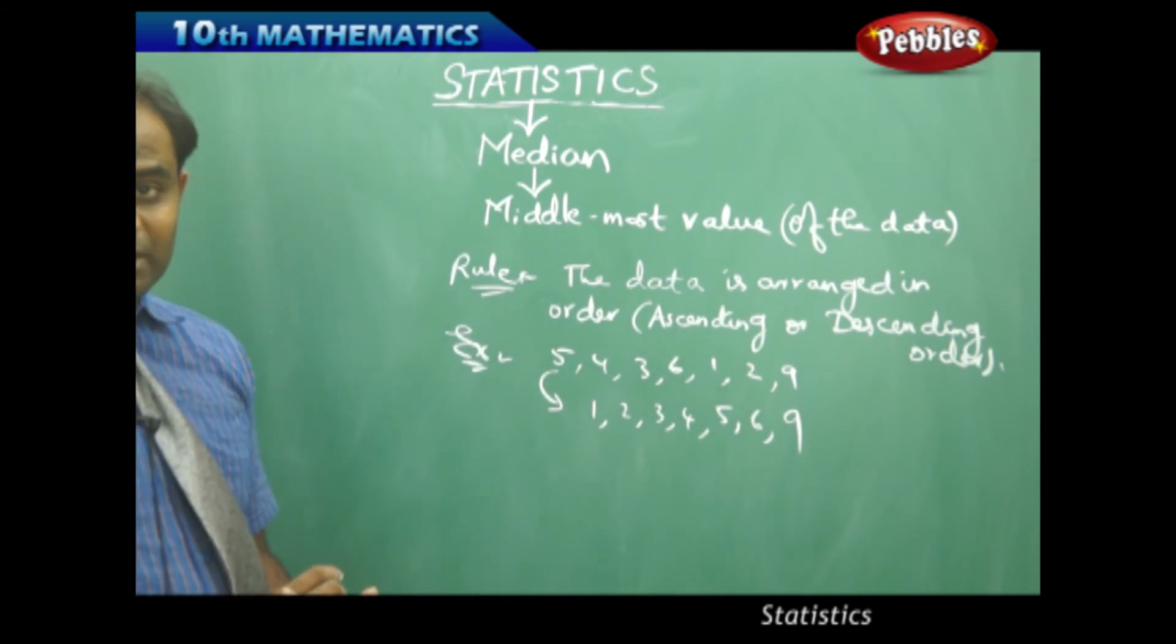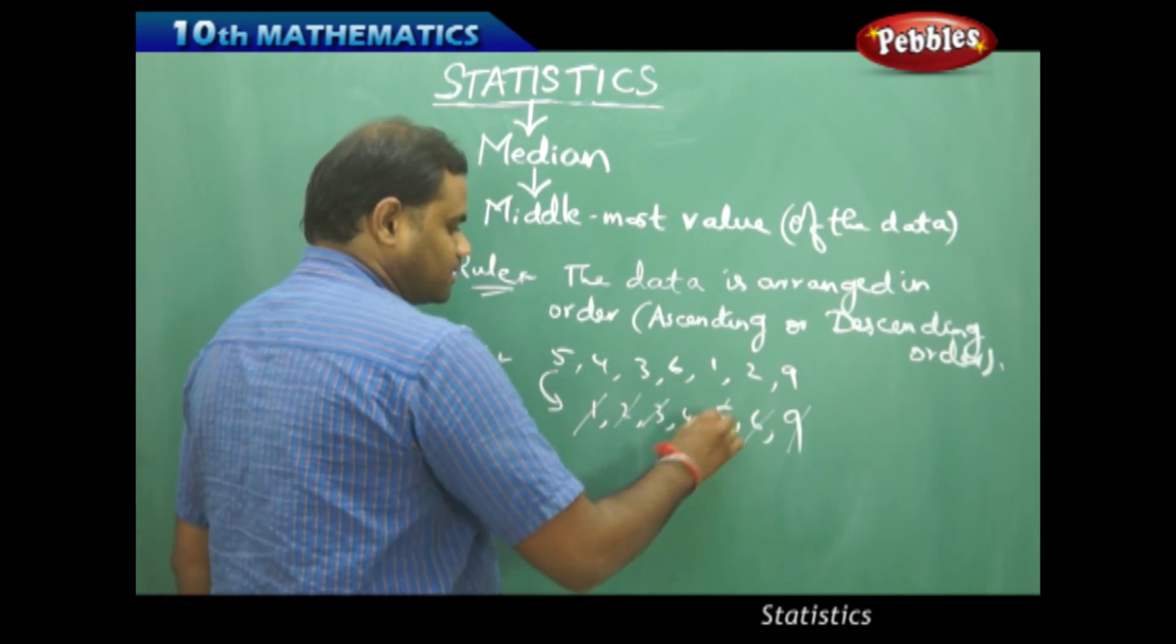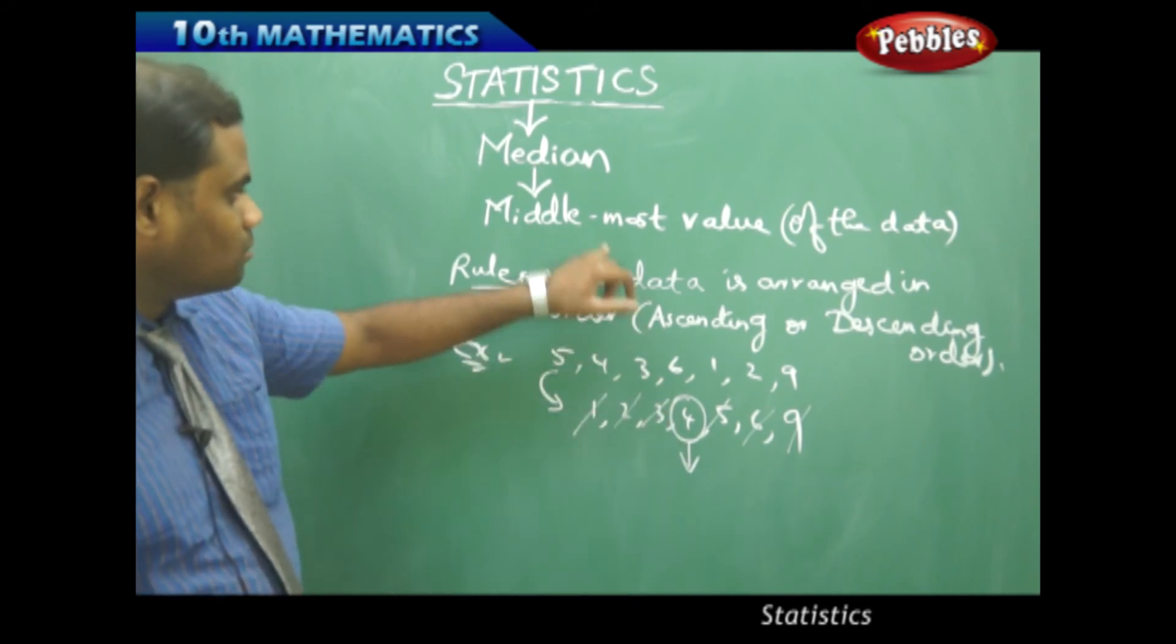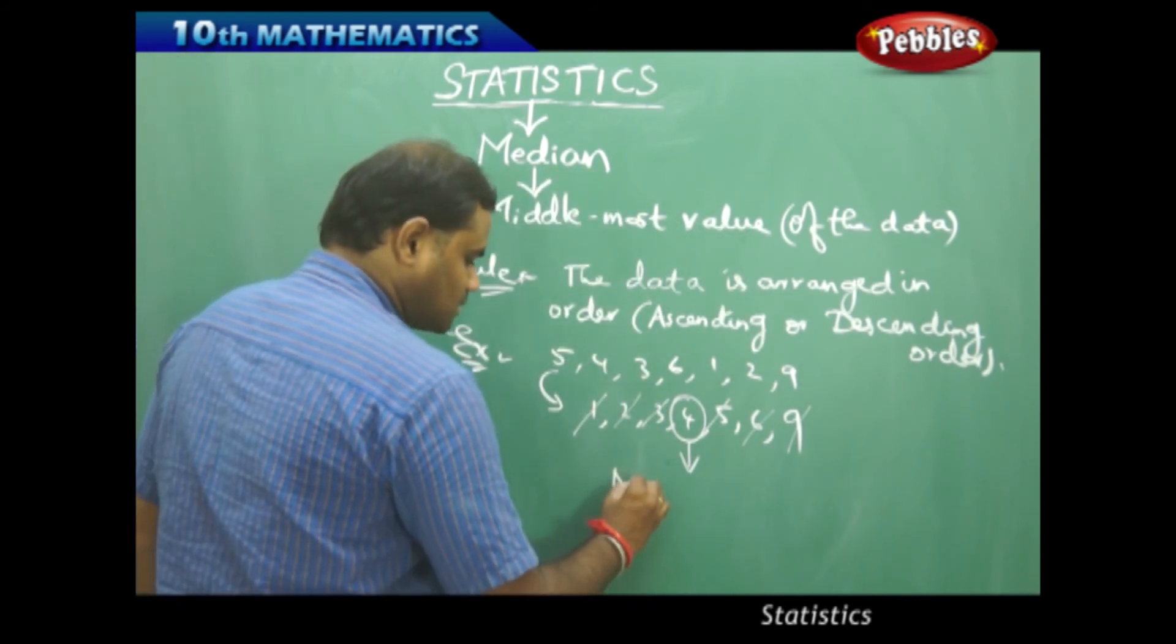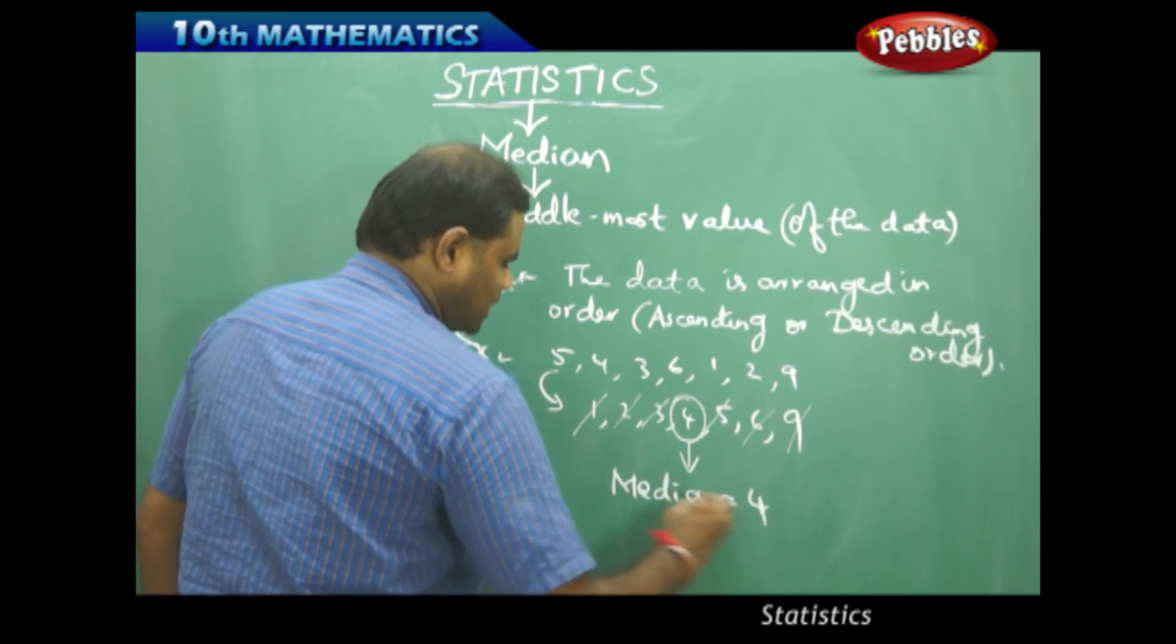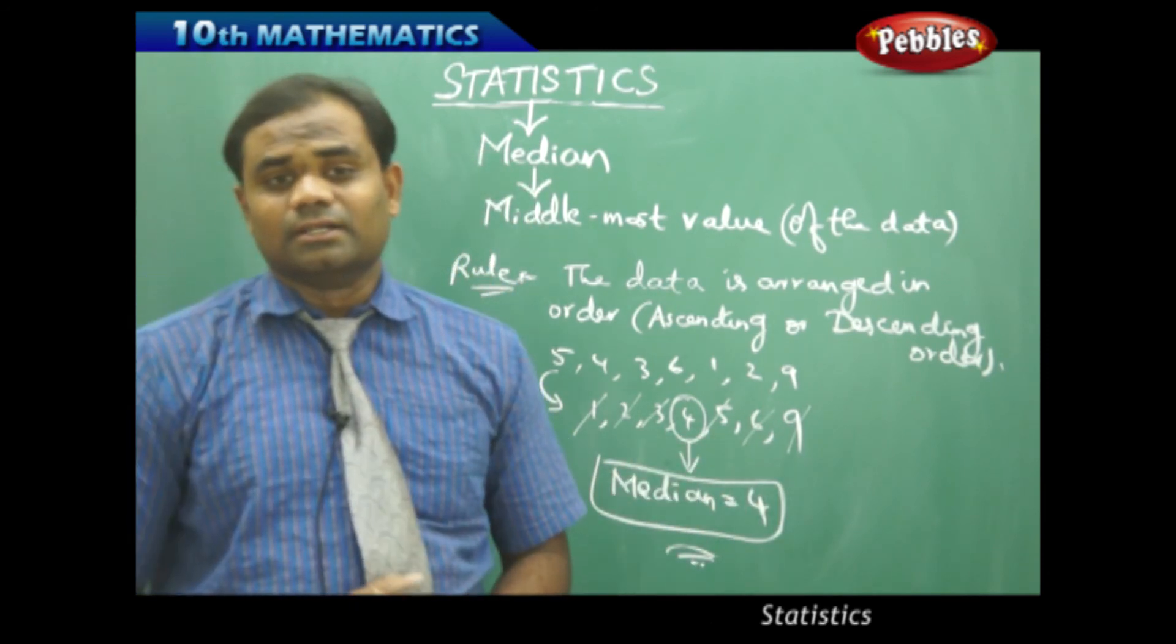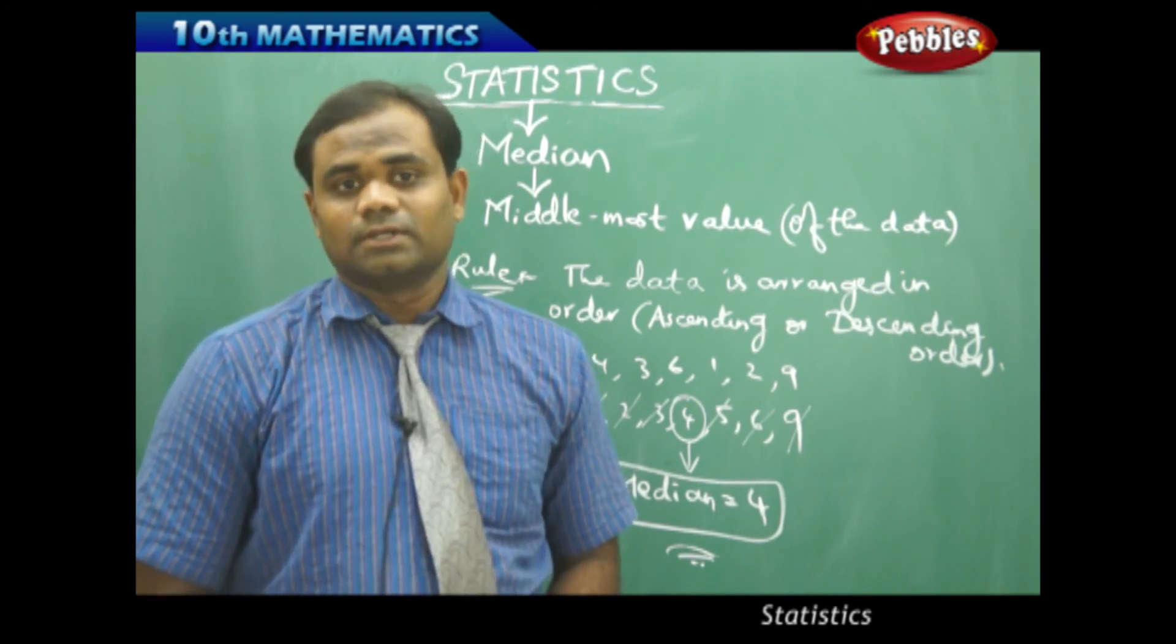Now as I see the middle most value, I get it by canceling this with this, this with this, this with this, and this is the middle most value. Therefore, this middle most value is called median. In this case, the middle most value being 4, here median is identified to be 4, is how we understand median connected with the data, the middle most value.